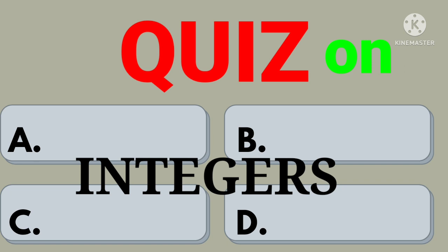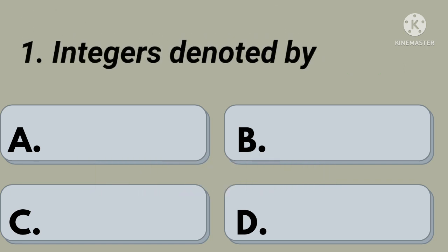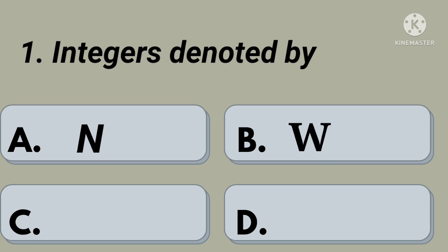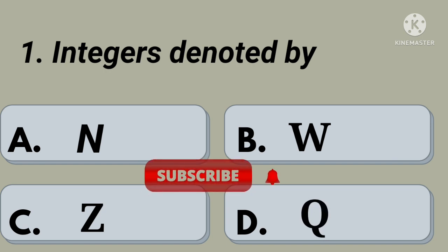First question: integers are denoted by — option A: N, option B: W, option C: Z, option D: Q. Your time starts now. Right, option C: Z.